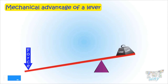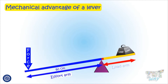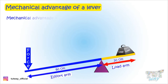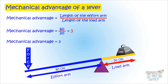Here is another example. The length of the effort side is 60 centimeters and the length of the load side is 20 centimeters. The mechanical advantage is the length of the effort arm divided by the length of the load arm, so it will be 60 divided by 20, which is 3. So the mechanical advantage in this case is 3.